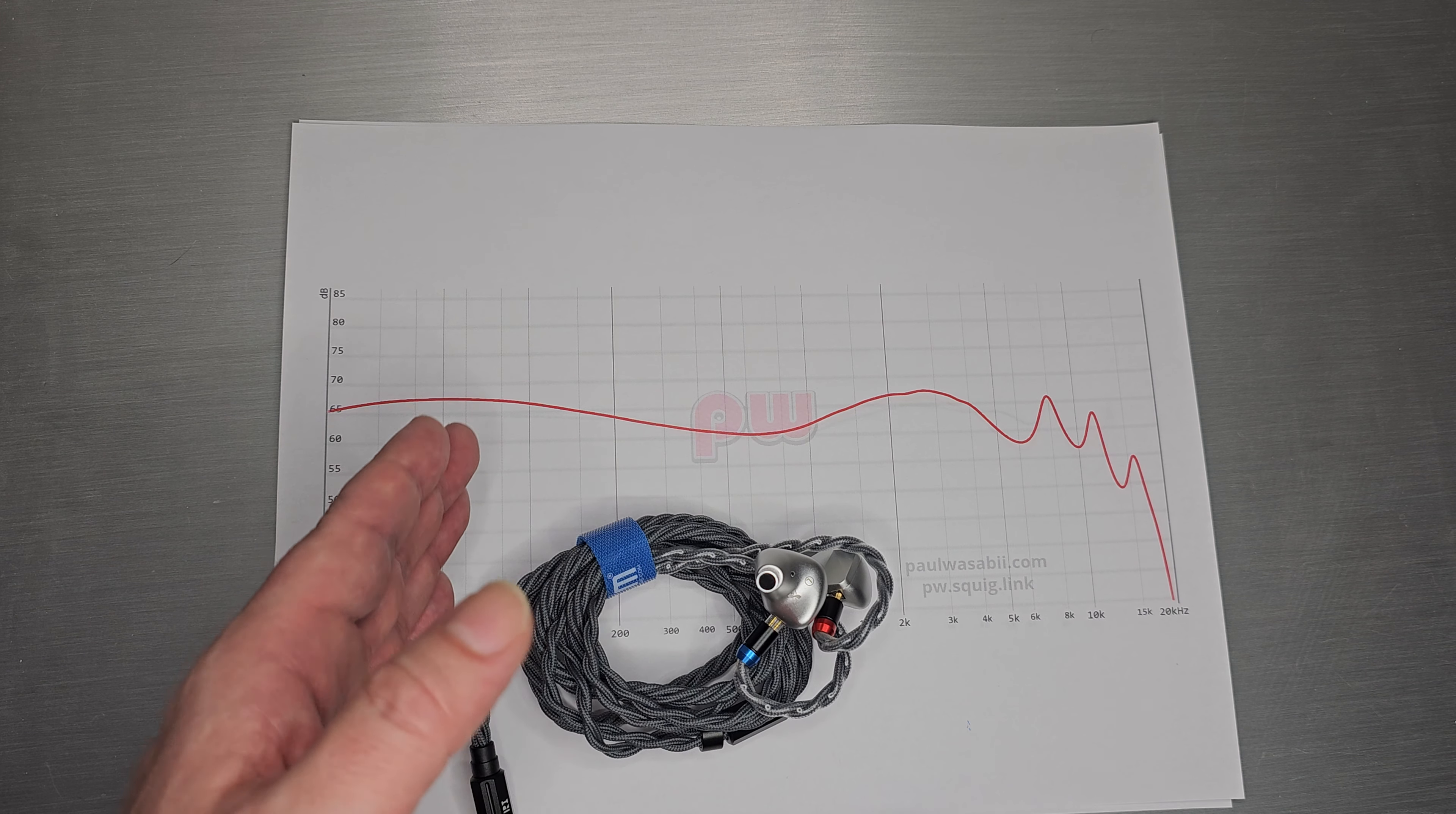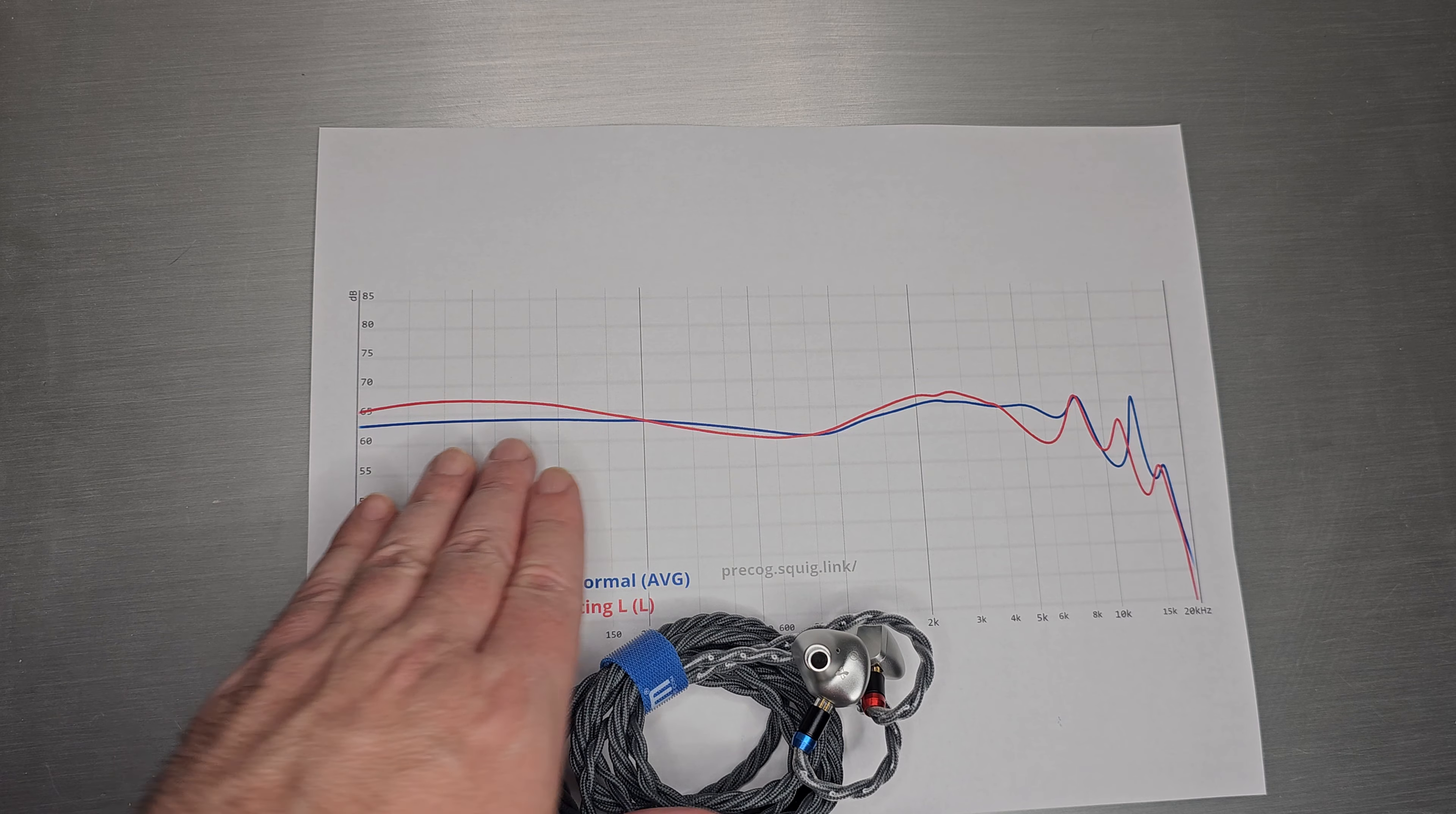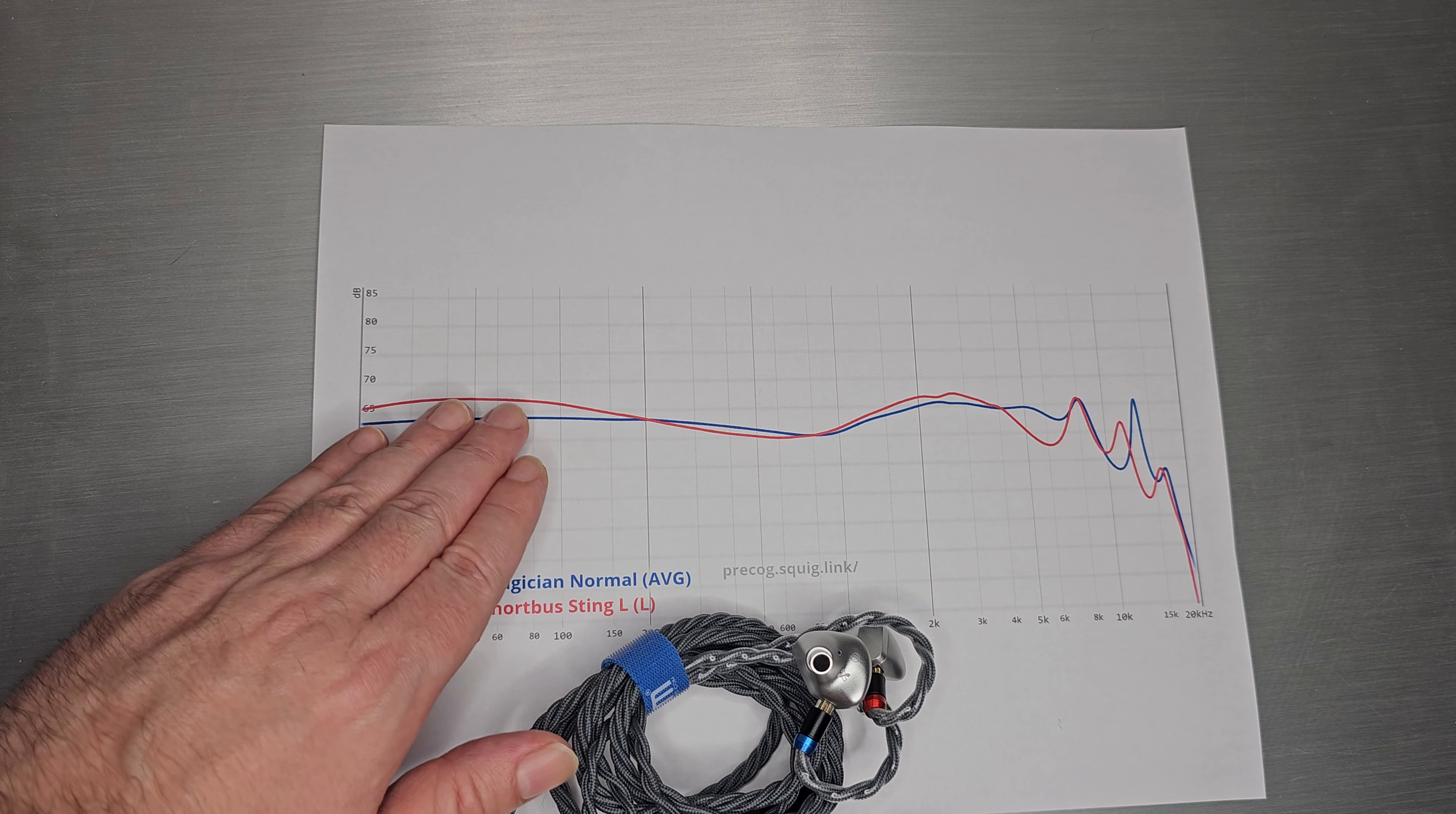I think he would agree that looking at it on its own it doesn't look like anything special, but put it in your ears and you couldn't correlate what was going on in your ear versus what was on the graph. It really took putting Dark Magician in the same graph to figure out what was going on. Many thanks to Precog - his Dark Magician measurement is much closer to the actual set than mine.